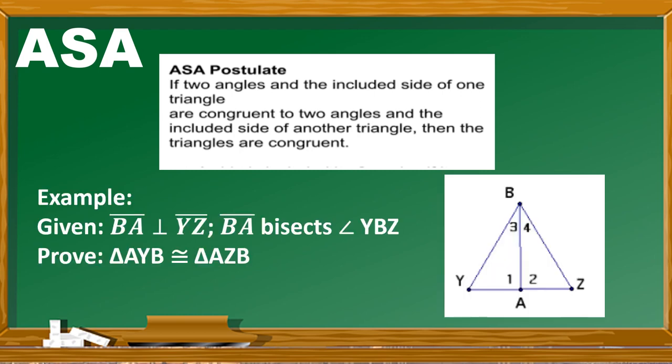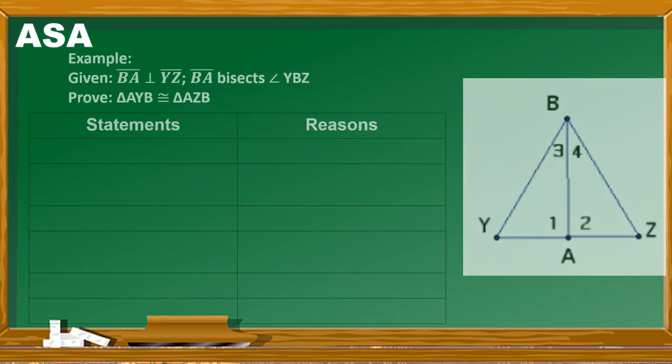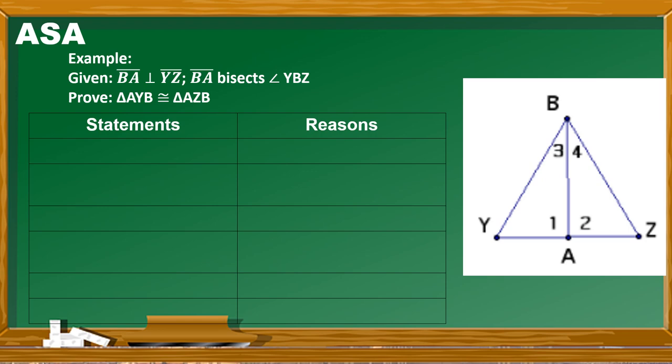For our ASA example, the given is: segment BA is perpendicular to segment YZ — the inverted T symbol indicates perpendicularity — and segment BA bisects angle YBZ. We need to prove that triangle AYB is congruent to triangle AZB. We have our illustration, and the first statement is: segment BA is perpendicular to segment YZ, with reason given.